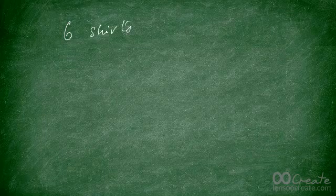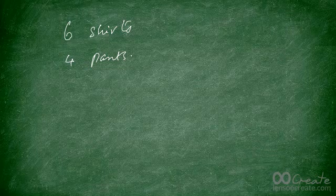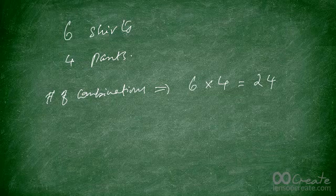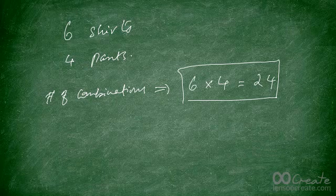Let's try a simple idea. Let's say that you own six shirts and four pants, and you want to figure out how many different combinations you can create, assuming that every shirt can be worn with every pant. The number of combinations is going to be six times four, which is equal to 24. Because with each shirt you can have four pants, so with six shirts you get a total of 24 combinations.